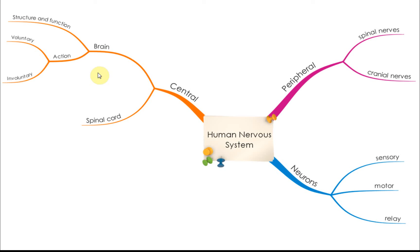The last thing that you need to know about the brain is the cause or the effects of injury. For example, injuries of the cerebrum will cause what, and what will happen if there are injuries of the medulla oblongata or the cerebellum. That is the effect of injury.